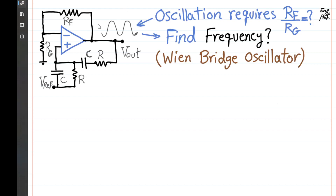The Wien Bridge oscillator is shown in this circuit. We want to find under what condition the oscillation at the output starts working and what is the frequency of that. By condition I mean what should be the gain in the circuit, and therefore what should be RF over RG — RF being the feedback resistor and RG is the resistor here.